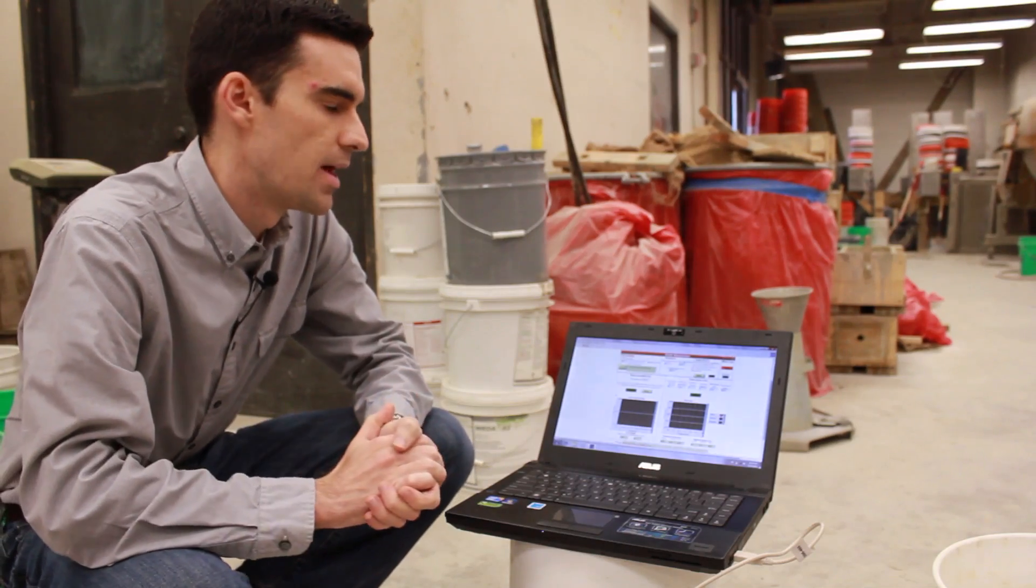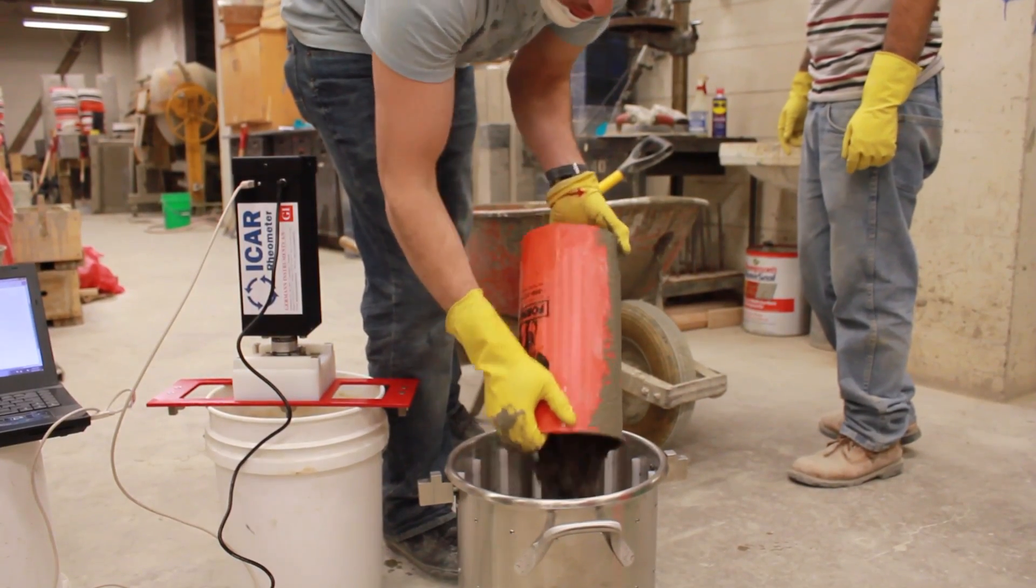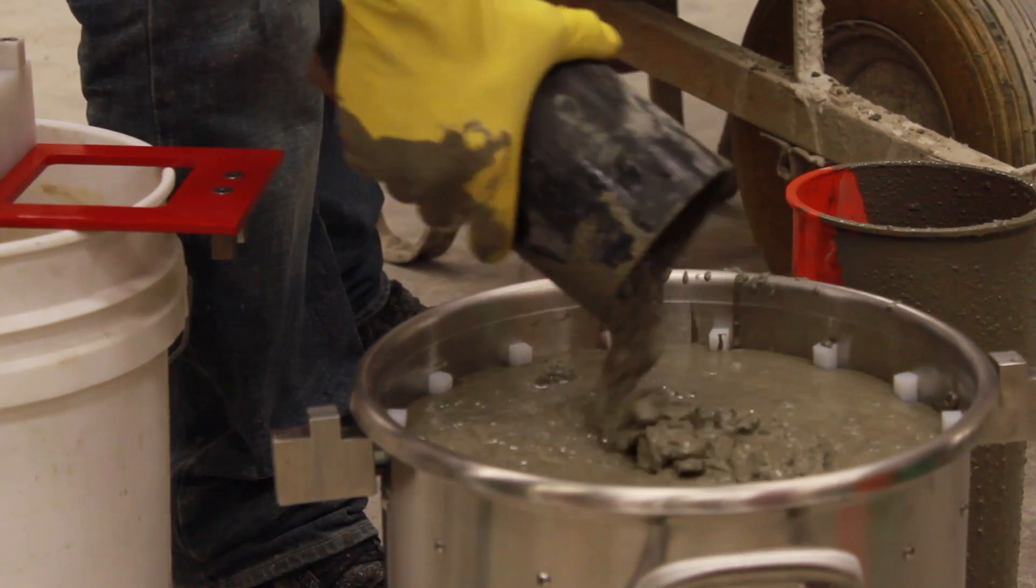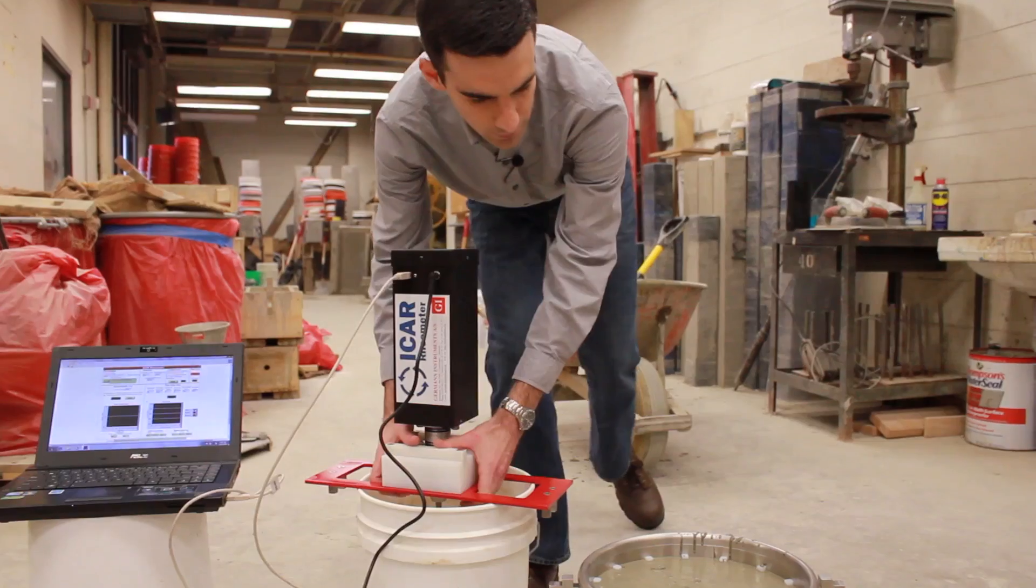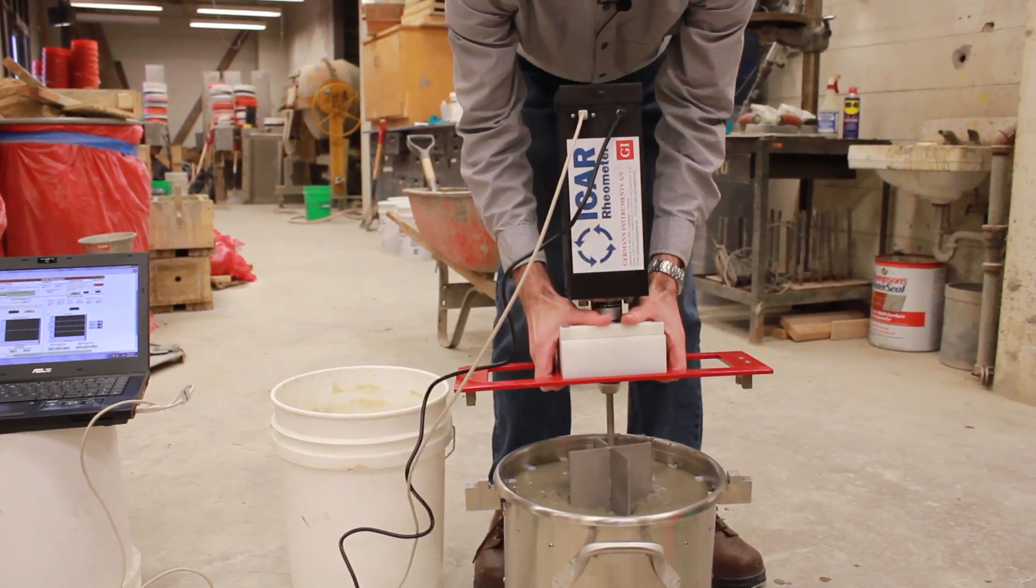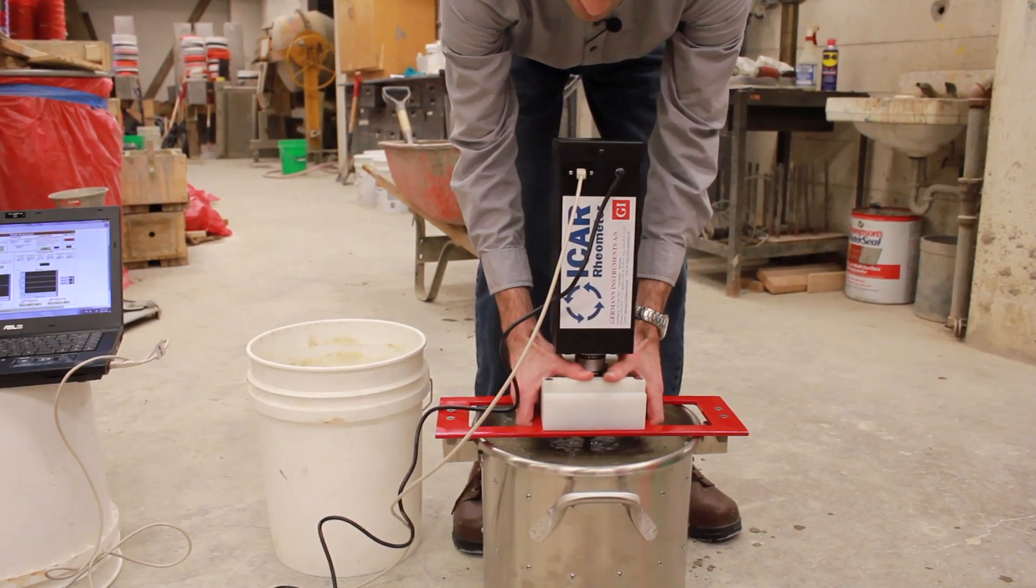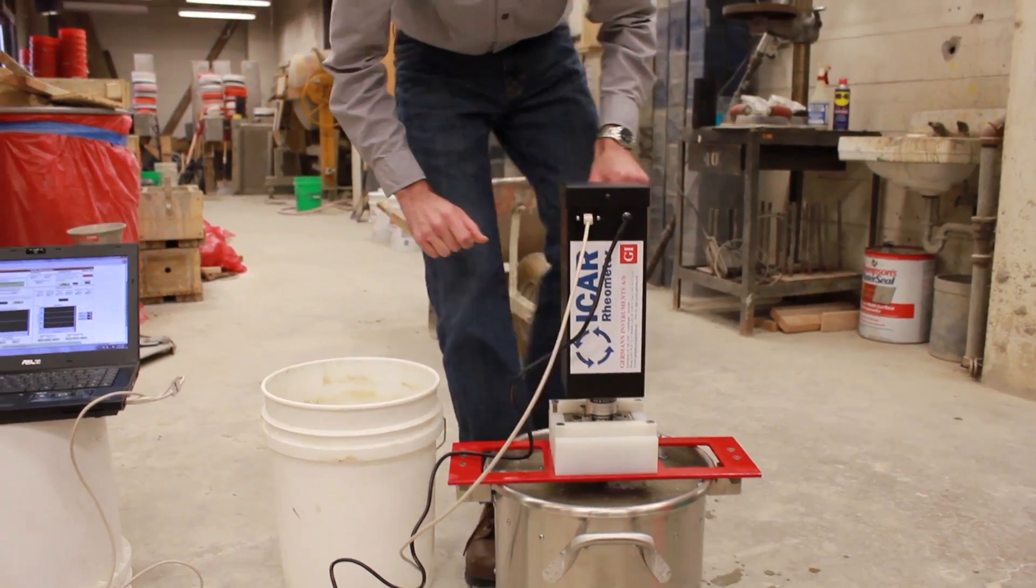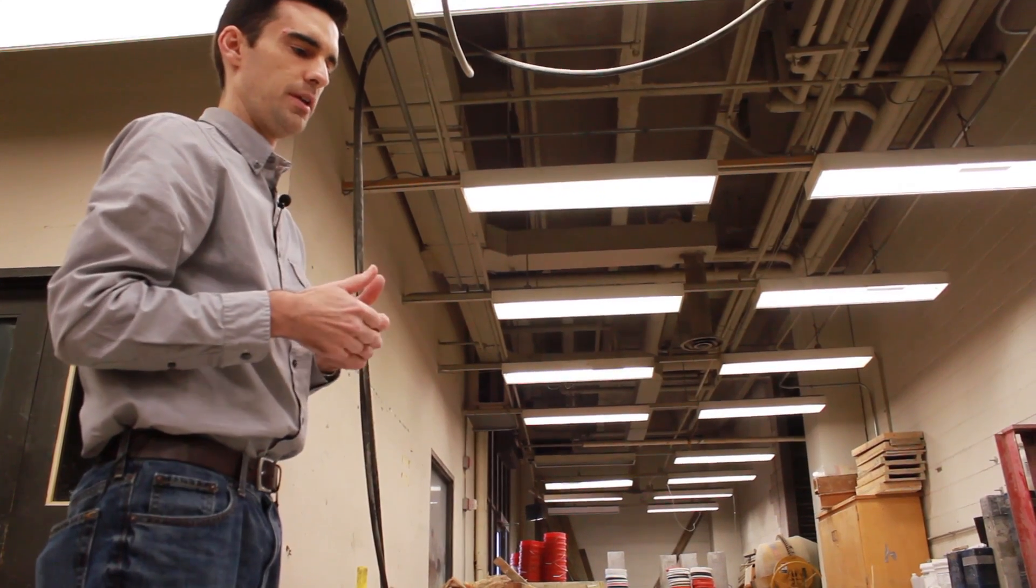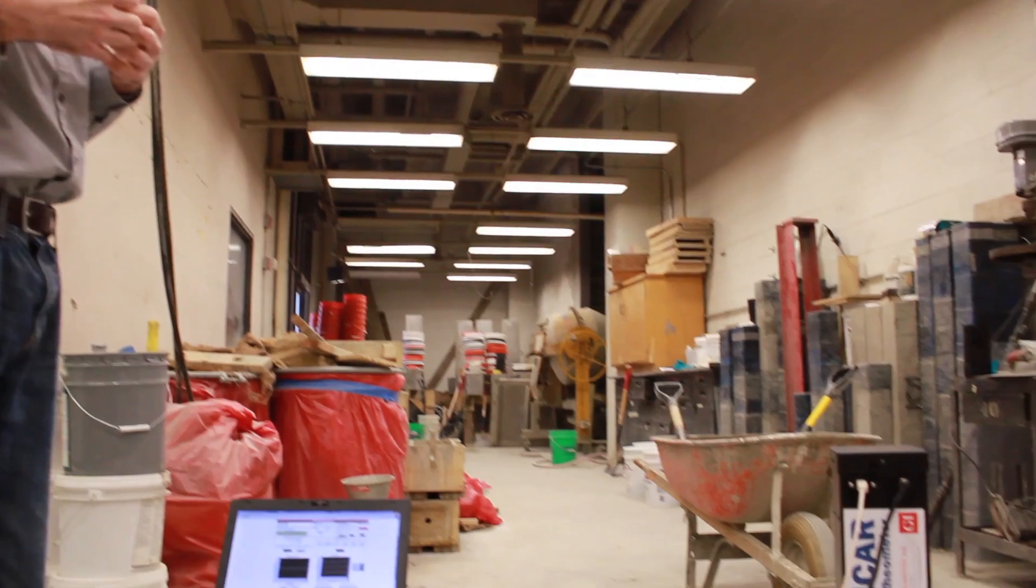Now we're going to run both a stress growth test and a flow curve test. I'm just going to take the rheometer and insert the vane very carefully into the center of the concrete and let the frame slide right on. The rule of thumb is if the concrete is too stiff to push the rheometer vane down in the concrete, it's too stiff to test.